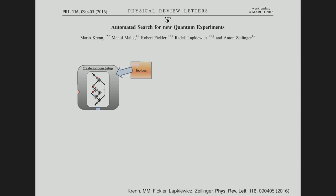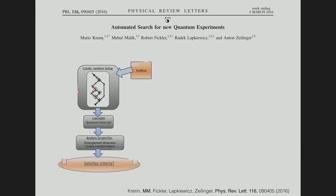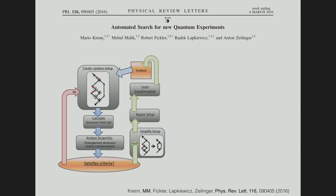We took a toolbox of elements — beam splitter, mirror, spiral phase plate, OAM beam splitter — and told the computer to create random setups, calculate the resulting quantum state, analyze its properties including dimensionality of entanglement, and use it to come up with unitary transformations. If it satisfied the criteria, simplify the setup; if not, start again. Finally, save the successful setup in the toolbox and use it to generate more random setups.